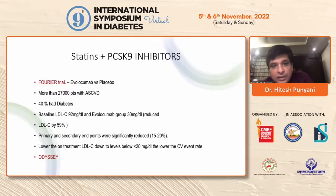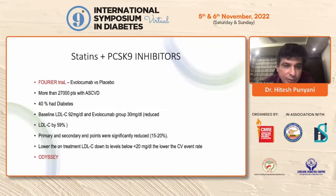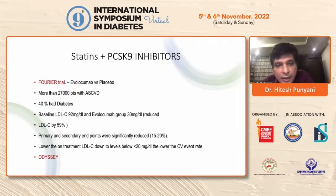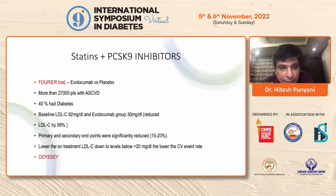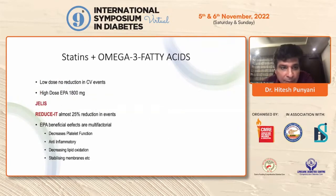PCSK9 inhibitors are another very potent class of molecules. FOURIER and ODYSSEY were the two major landmark trials, used along with statins. They are extremely potent — bringing down LDL cholesterol by almost 60–70%, and in some studies even 80%. The drawback is that they are injectables and extremely expensive drugs, so they can only be justified in select patients — but they are a very useful addition to the armamentarium.